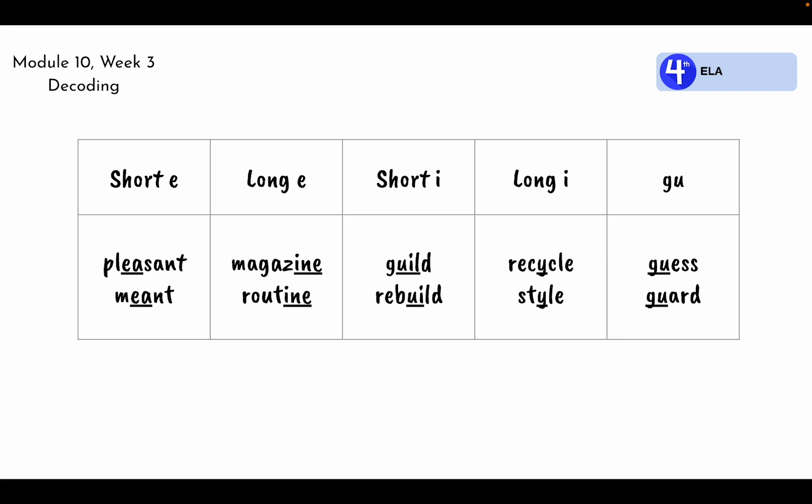The first is short e. We can spell it ea, as in pleasant or meant. For the long e, it can be spelled ine, as in magazine and routine. For words with the short i sound, they can be spelled with ui, as in guild and rebuild.